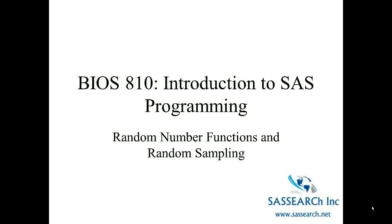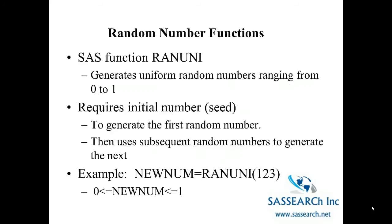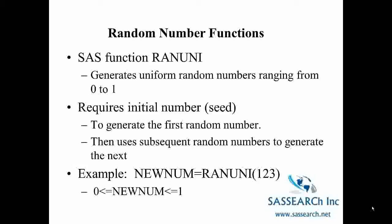Random number functions and random sampling. SAS has a number of functions that generate random numbers based on specific distributions. For example, the SAS function RANUNI generates uniform random numbers ranging from 0 to 1. So when you use the RANUNI function, any number between 0 and 1 is equally likely to be generated. The way the function works is that it requires an initial number or a seed which generates the first random number.